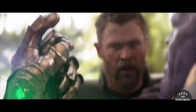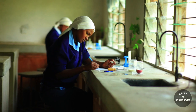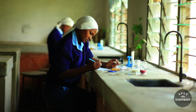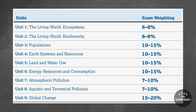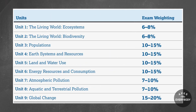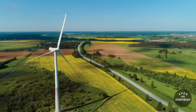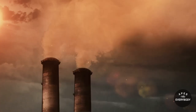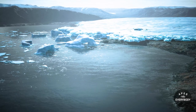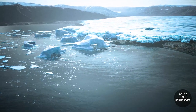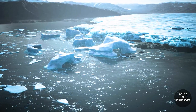It turns out that sex ed and increasing economic opportunities for women is pretty effective. More specifically, we'll cover nine units ranging from familiar biology concepts like ecology and biodiversity to anthropogenic or human-related concepts such as land use, energy production, and pollution. And to top it all off, we'll end with the keystone topic in Unit 9: Global Change.